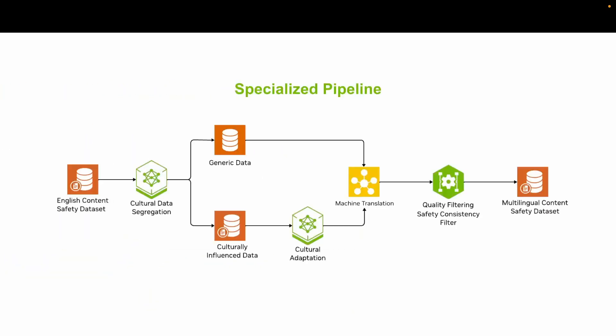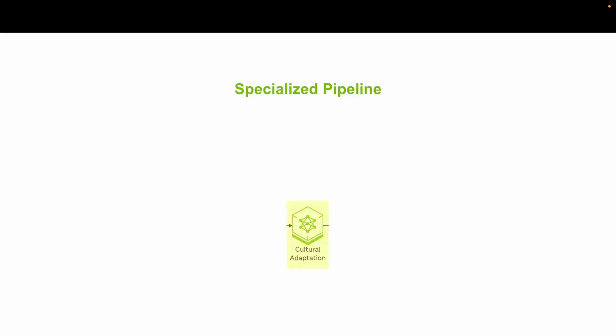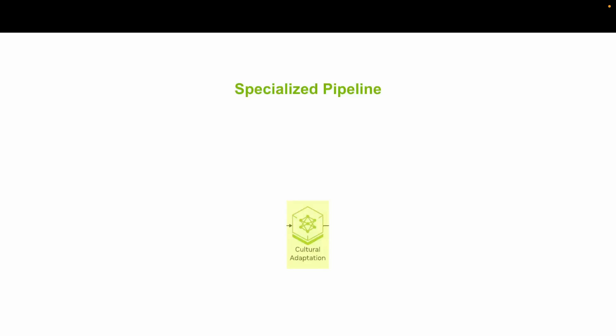We use two key techniques to make this model not just multilingual, but culturally aware and scalable. First is LLM-driven cultural adaptation. This technique helps the model understand local context by adjusting prompts and responses to match regional idioms and sensitivities. For example, an English prompt saying 'I am bringing pumpkin pie to the party' becomes 'I am bringing gulab jamun to the party' in Hindi, where gulab jamun replaces pumpkin pie to reflect a dessert that is culturally familiar in Hindi-speaking contexts. This preserves the communicative intent while changing the cultural reference, so the sentence feels authentic and relatable rather than just a literal translation.